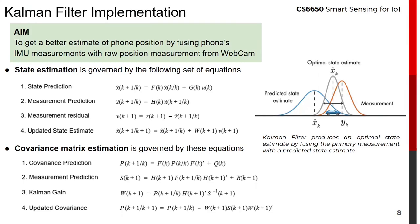Let us look at the basic idea of a Kalman filter and its implementation in our project. A Kalman filter is an optimal state estimator which takes in noisy measurements as inputs, fuses these measurements, and gives out a more accurate estimate than the individual measurements. Kalman filtering involves estimation of two quantities: the covariance of the state and the state itself. These are governed by a set of equations where matrix F (the state transition matrix) and matrix G (the control transition matrix) are obtained from basic equations of motion. Vector U is the acceleration measurement from the IMU and vector Z is the position measurement from the webcam, used to estimate state matrix X̂.